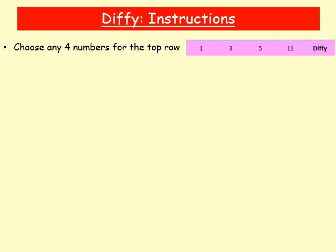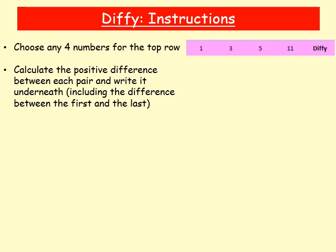Don't worry too much about that at the moment — it will all become clear. So what we're going to do next is calculate the positive difference between each pair of numbers and write it underneath, including the difference between the first and last. So between the first set of numbers, you take the smaller number from the biggest: 3 minus 1 equals 2. That'll be your first calculation.